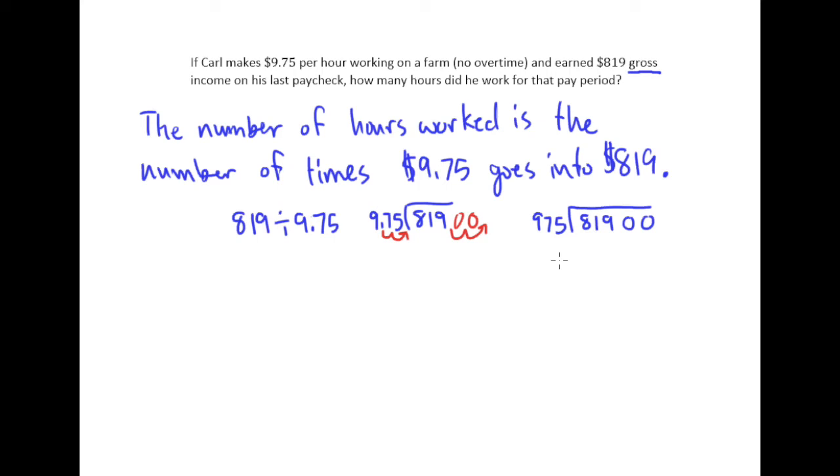Boy, this is tough. 975 is almost 1,000, right? And 1,000 wouldn't fit into 8, it wouldn't fit into 81, it wouldn't fit into 819. It would fit into 81,900 about 8 times, right? That's how many times 1,000 would fit in. So I think that's a pretty good guess for 975. So I'll put an 8 up here.